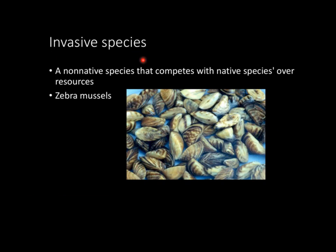Now let's look at invasive species. An invasive species is basically a non-native species that competes with native species over resources. The book talks a lot about zebra mussels, which were introduced into the Great Lakes. The problem is that these zebra mussels ate phytoplankton and zooplankton that native fish depended on. Basically, a non-native species like the zebra mussel is introduced and provides another layer of competition to the native species.